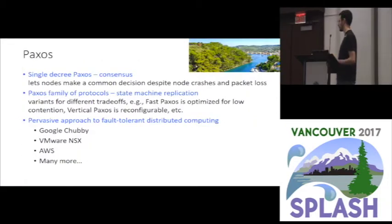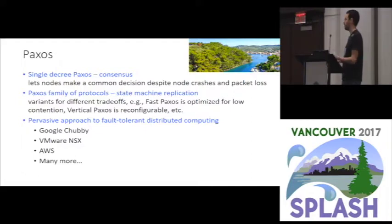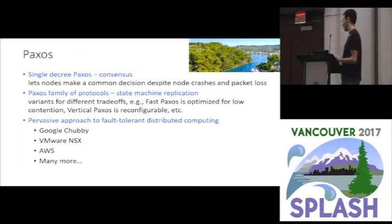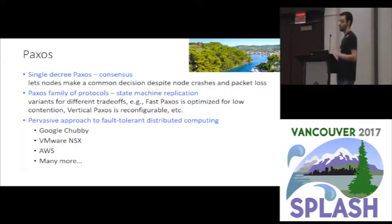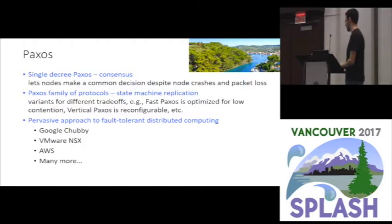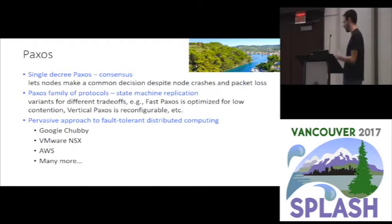This talk is mostly about Paxos. For those of you who don't know, Paxos at its simplest form is a consensus protocol that lets nodes agree on a single value, and it can also be used for state machine replication, which is the most common approach for strong consistency. Paxos lets you attain strong consistency so that if you have a replicated state machine, all the nodes are guaranteed to be in the same state. It's a pervasive approach to obtain fault-tolerant distributed computing, used by really everyone that has distributed systems.